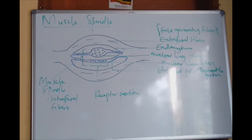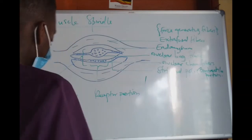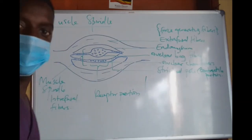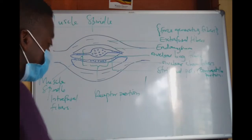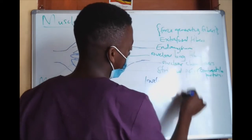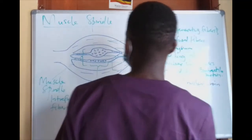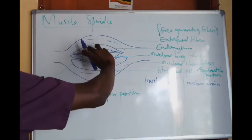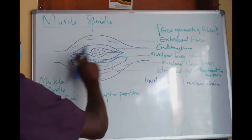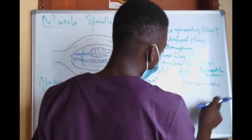Nuclear bag fibres have many nuclei congregated into an expanded central portion. Comparing the nuclear bag with the nuclear chain: you can see that the nuclei in the bag are arranged into an expanded bag at the center of the fibres, whereas the nuclear chain has just a chain of nuclei. So the names reflect the first difference.